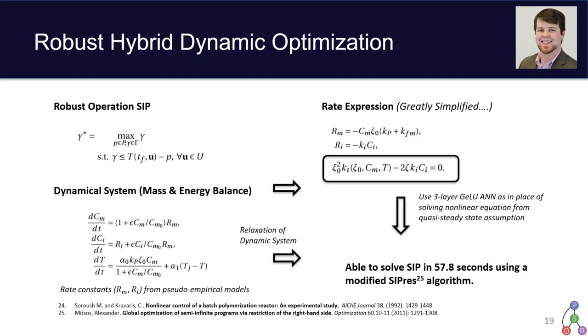The actual rates, though, get kind of complicated in that you have to solve this nonlinear system of equations to find a quasi steady state. So we've replaced this with a surrogate three-layer Gaussian error linear units feedforward neural network to approximate this nonlinear solve. And then when we apply a modification to the SIP relaxation algorithm in EAGO, we can solve this in under a minute.